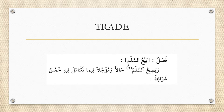In this first part of the lesson we're going to be talking about bay' al-salam, also called bay' al-salaf. Bay' al-salam is essentially a transaction of bay' shai'in mawsufin fi dhimma — the selling of something fully described upon one's neck. What happens is that you make a full payment in advance as a buyer for specific goods, typically agricultural products, which will be delivered at a future agreed-upon date.